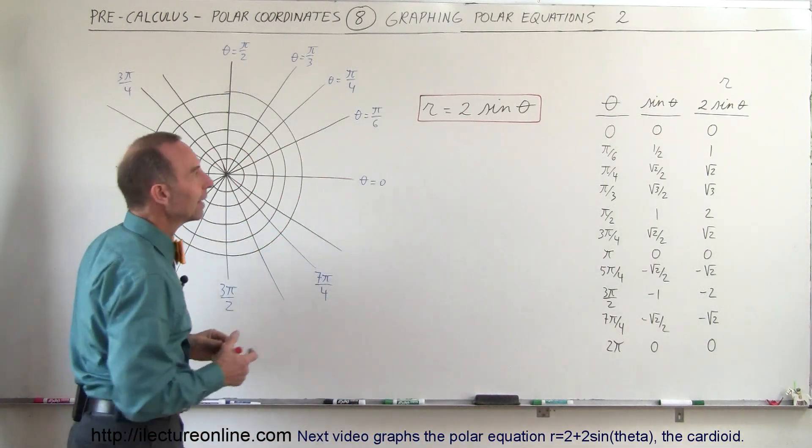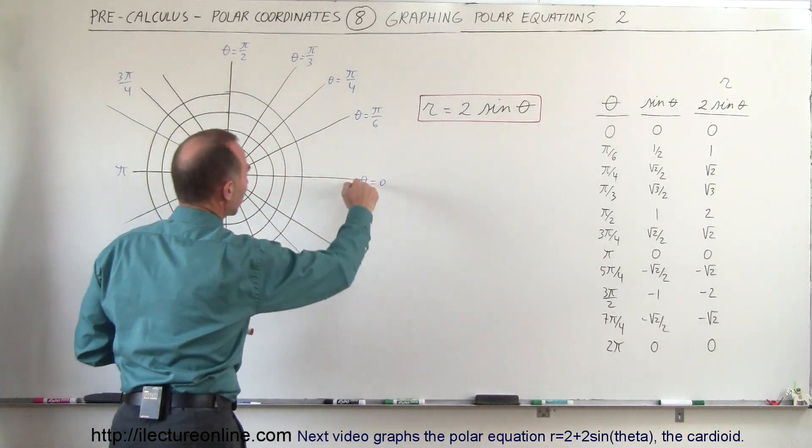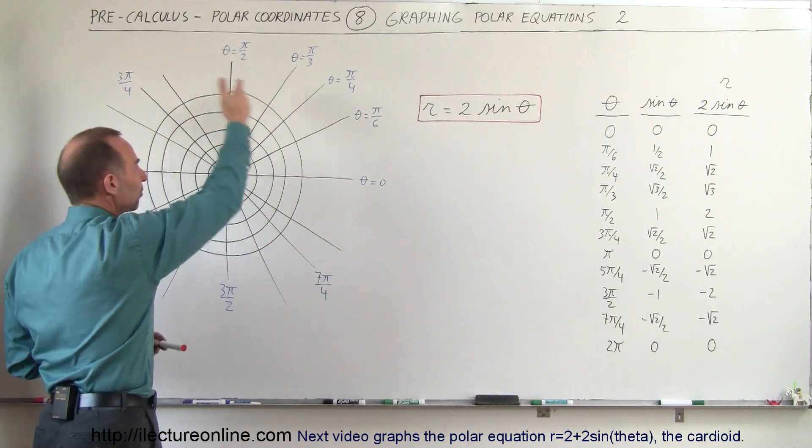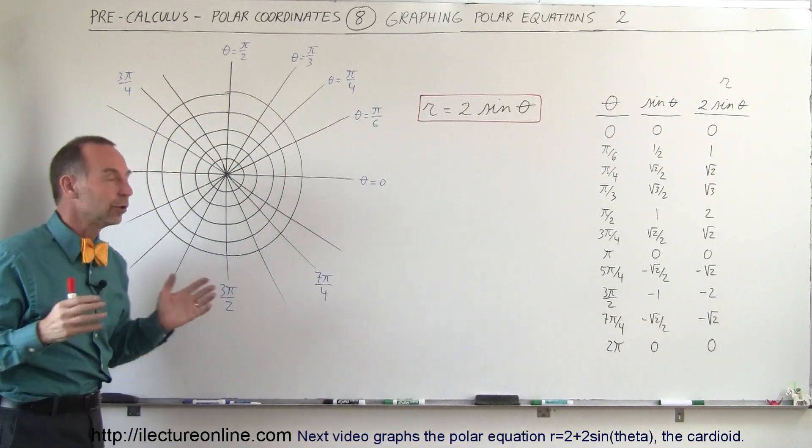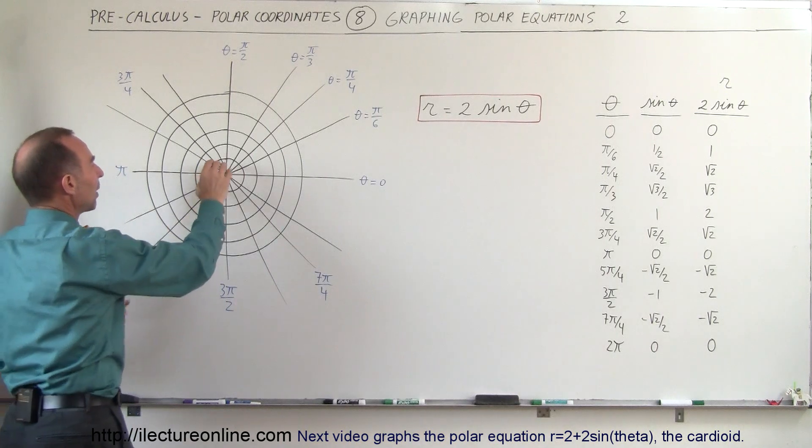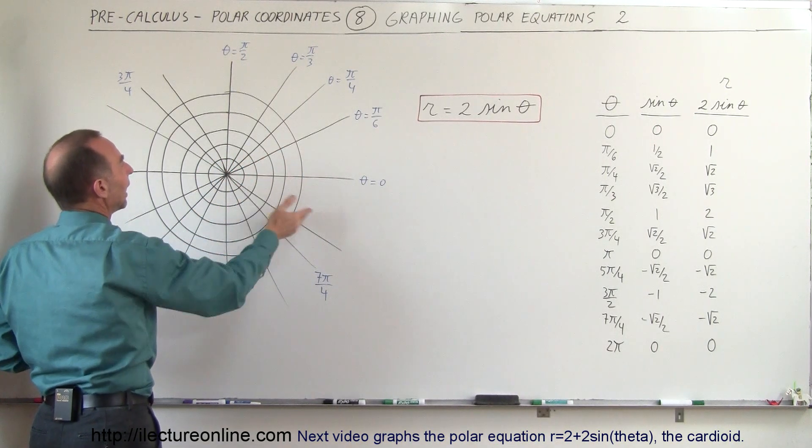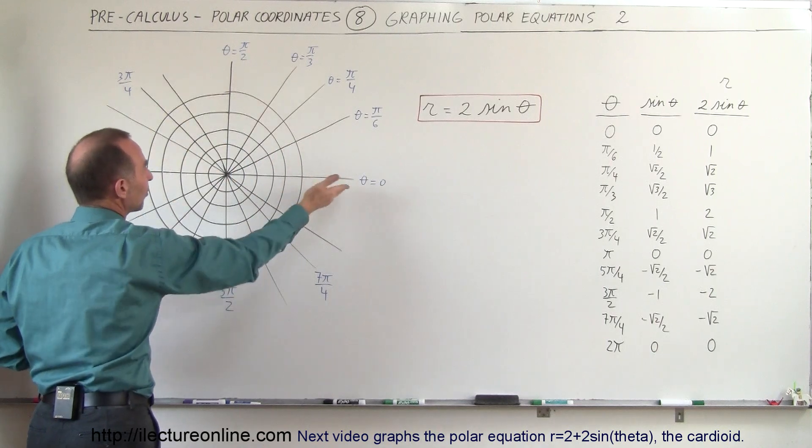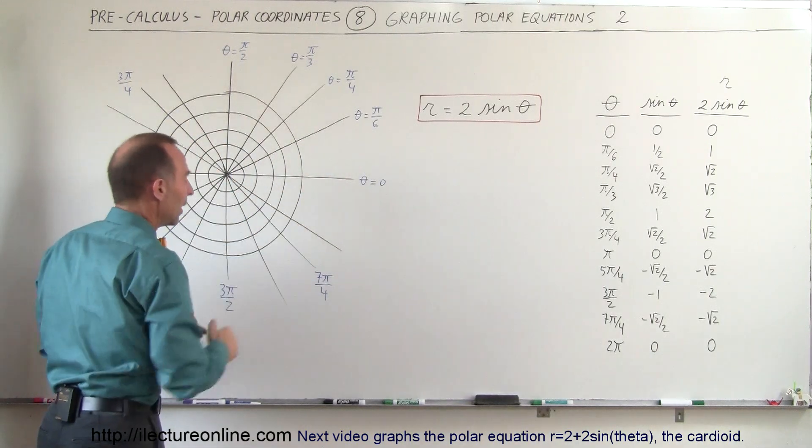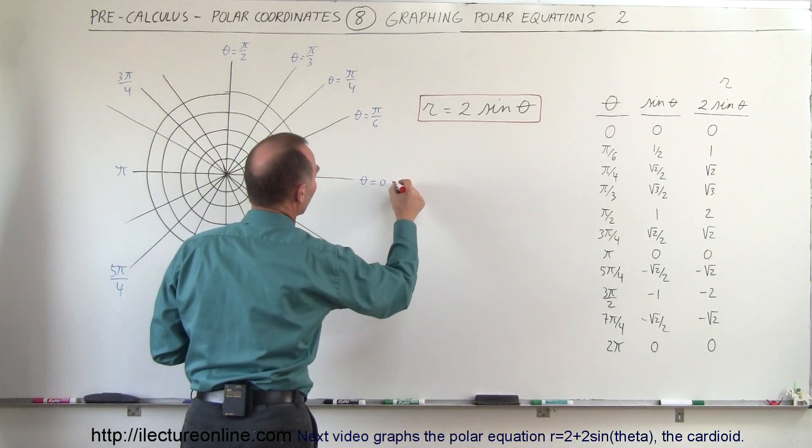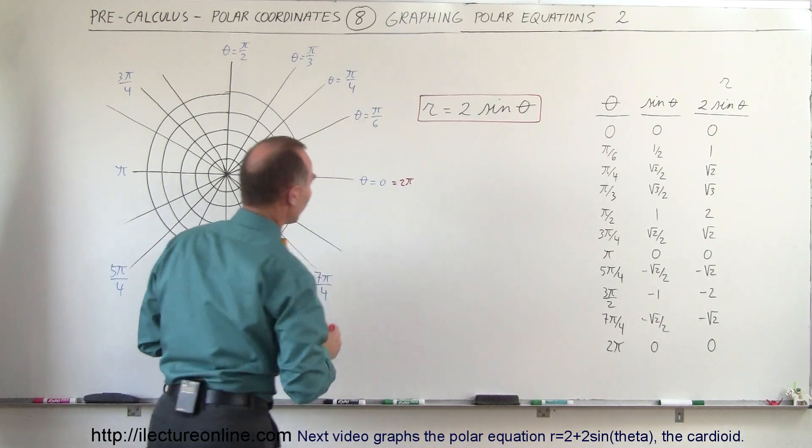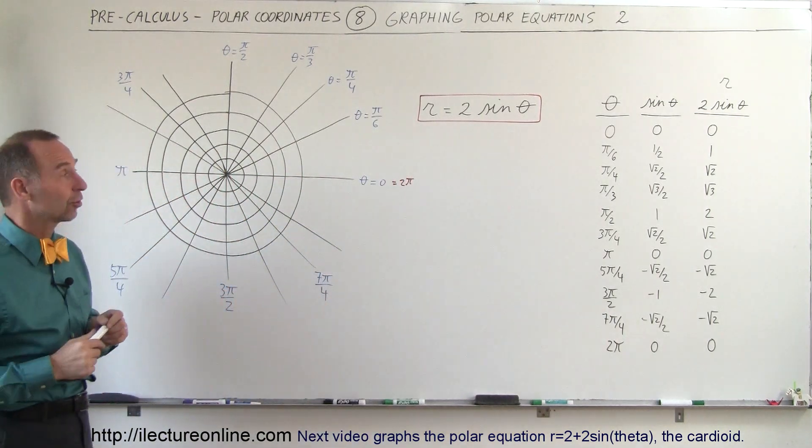Now when theta equals 0, that is this line right here. It's always nice to have this spiderweb kind of look on the xy axis. We have circles that represent distance away from the origin, the distance for r, and then we have the angle anywhere from 0 all the way to 2π. So this is also 2π as well as 0, and we go all the way around the circle.